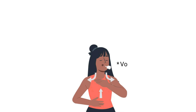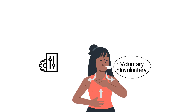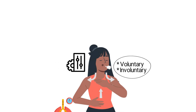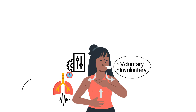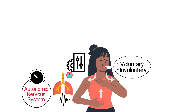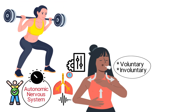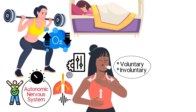Breathing is both a voluntary and involuntary process. While we can control our breathing rate and pattern consciously, the autonomic nervous system regulates it automatically to match the body's needs. For example, during exercise, the body requires more oxygen and the respiratory rate increases accordingly. Conversely, the rate slows down during rest.